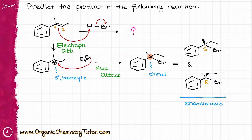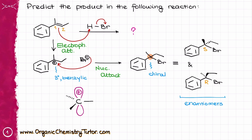Why did I get a pair of enantiomers? In this case, the attack by the nucleophile on our carbocation can happen from either side of the molecule. The carbocation is a flat trigonal planar structure, which means that any nucleophile can attack it from either one side or the other side. Because of that, my bromine can attack from either the front face or the back face of the molecule, giving me two stereoisomers — in this particular case, two enantiomers.